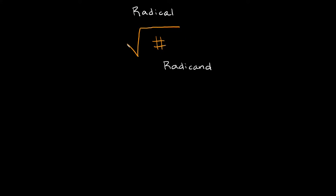You can kind of think of this as the opposite of exponents. So for example, let's say we had 3 squared right here. Now 3 squared is the same thing as 3 times 3, which is equal to 9.